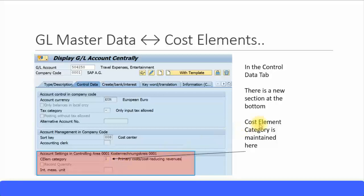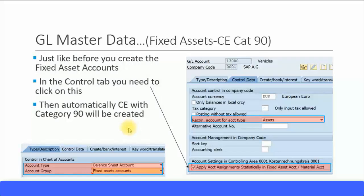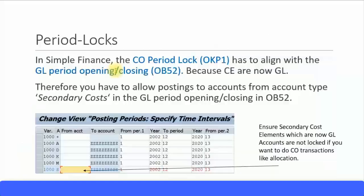This cost element category section is a new section that was not there before. For assets created as cost element category 90: in the first tab of the GL account master data you select Balance Sheet Account and then select your Fixed Assets account group. In the next tab under Control Data there is an additional section where you tick 'Apply Account Assignments Statistically in Fixed Asset Accounting' — this creates the balance sheet account with cost element category 90. You must also ensure the asset account is selected as a reconciliation account.